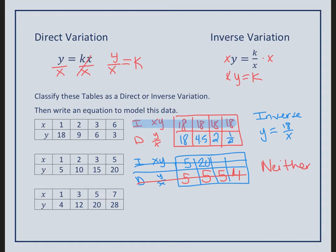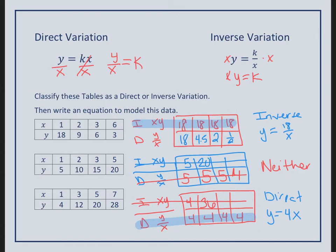Go ahead and try the last one on your own. Pause this video here and let's see if you can get the correct k value. Let's check how you did. When I started multiplying them, I got 4 and I got 36. That was already proven that this was not inverse. Remember, inverse is k over x. So as x increases, my y should be decreasing. And it's not. When I divided, though, to solve for k, I did get a constant of 4. So my equation would be 4x.